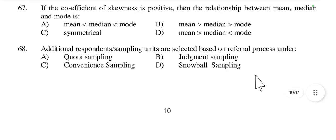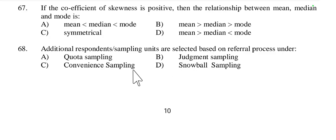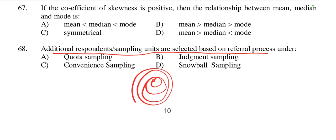Question 68: Additional respondents or sampling units are selected based on a referral process under — quota sampling, judgment sampling, convenience sampling, or snowball sampling? This technique is called snowball sampling. It is often used in studies where the population is hard to reach, and existing participants help recruit future participants from among their acquaintances.